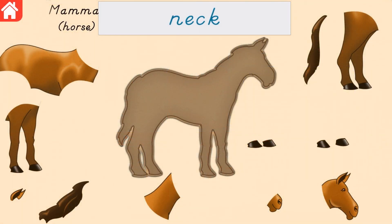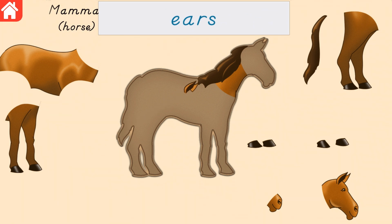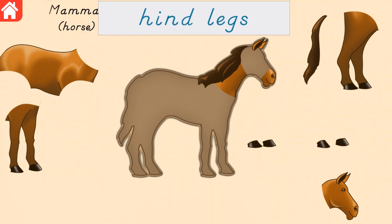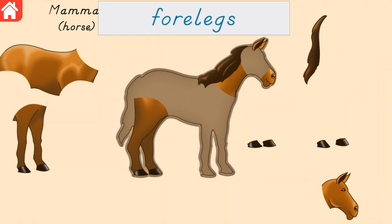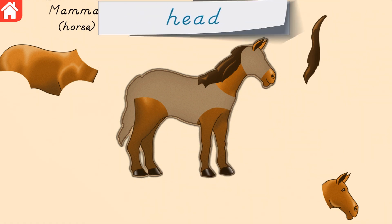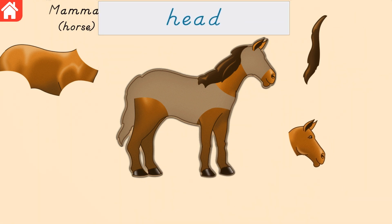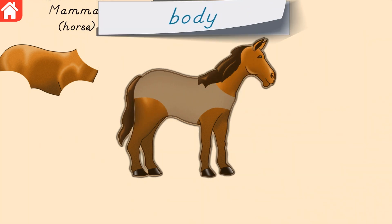Find the animal puzzle piece that matches the label shown. Neck. Mane. Ears. Muzzle. Hindlegs. Forelegs. Hooves. Head. Tail. Body.